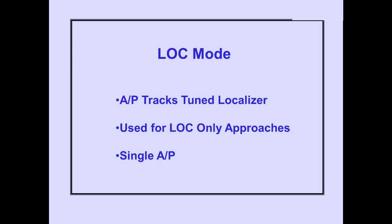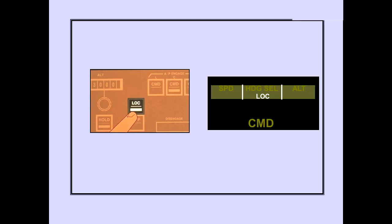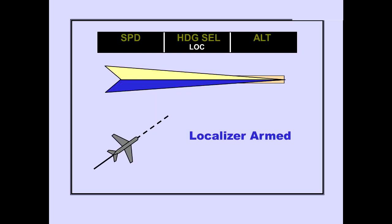The last roll mode is the localizer mode. In the localizer mode, the autopilot captures and tracks the tuned localizer. This switch is used for localizer-only approaches, and only a single autopilot can be used. Pushing the localizer switch selects the localizer mode. The proper localizer frequency and course selection must be set prior to localizer capture. This can be accomplished either manually or automatically through the FMS-CDU.